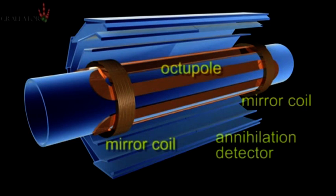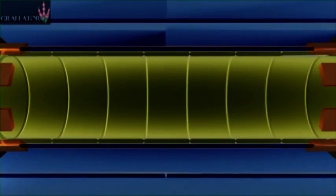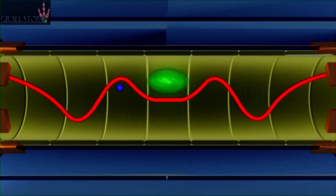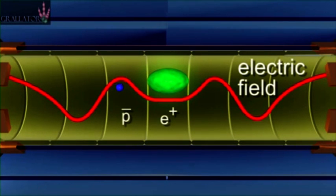What ALPHA does is work with the simplest anti-atom, anti-hydrogen. Hydrogen is number one on the periodic table. Anti-hydrogen is the antimatter equivalent of that.